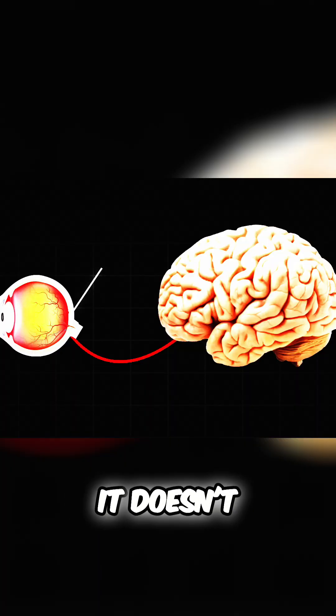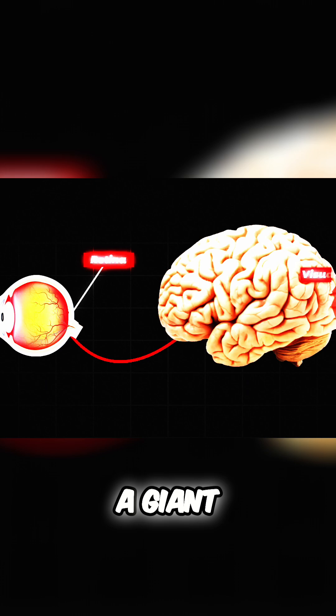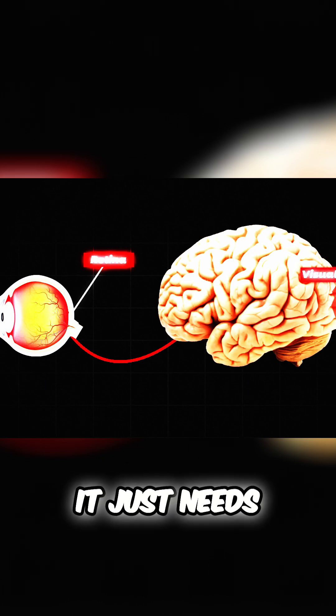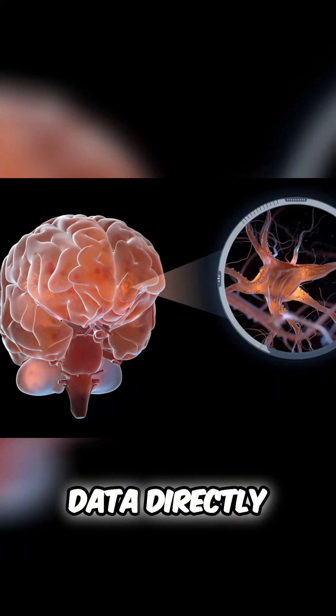Turns out it doesn't need to know. The brain is basically a giant pattern-matching machine. It just needs data, and Neuralink is ready to deliver it wire by wire. Blindsight will feed that data directly into the visual cortex.